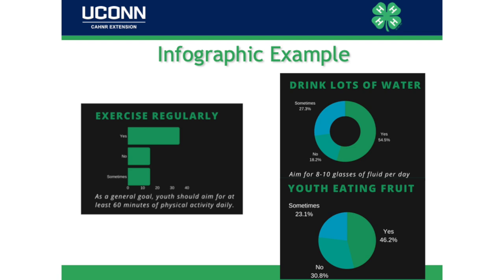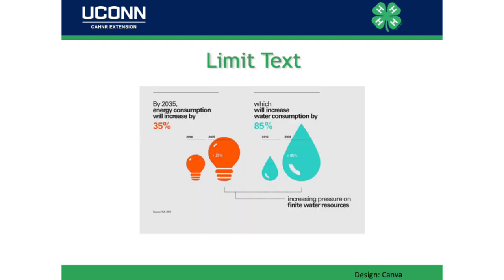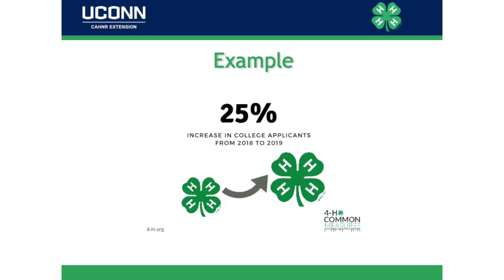I took the free template infographic on healthy living out of Canva and all I did was change the shade of green from lime green to 4-H green — that's exactly how it came out of Canva. If you only change one thing and put your own data in, you get that pretty simply. Those pie charts and bar graphs are built right into Canva — you just put your own numbers in and the platform populates it for you. The design principle is to limit text.